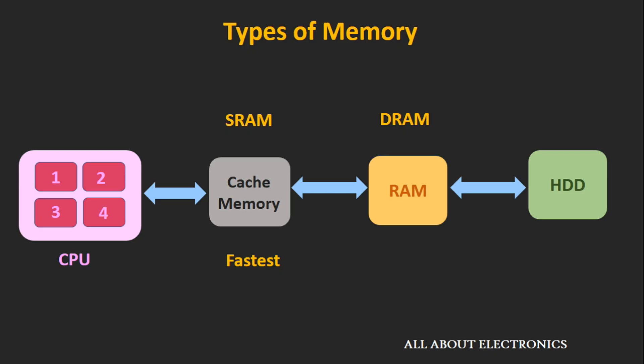Cache memory is the fastest among all memories. It is also a random access memory, but a special kind known as static RAM. Unlike the dynamic RAM found in normal RAM, static RAM is quite fast. The typical size of cache memory is in the range of KB up to MB. The data which is frequently required by the CPU — including instructions and data — can be supplied by this cache memory.